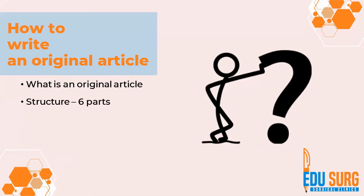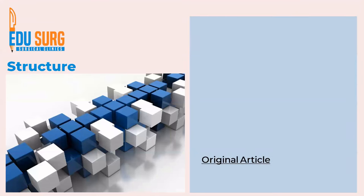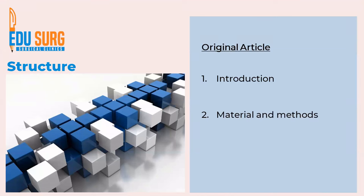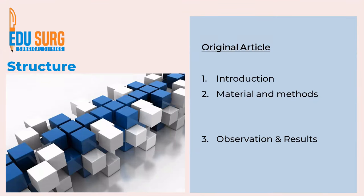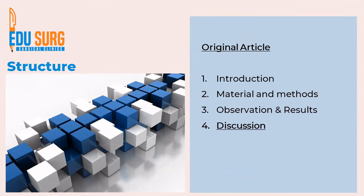We have already seen what an original article is and we have seen the structure in the previous video. If you have not seen it, do have a look. Today we will dive into how to write a good discussion and conclusion for the original article. Just a quick recap: the structure has six parts — introduction, material and methods, observation and results, discussion, conclusion, and references.